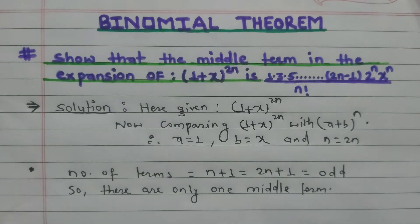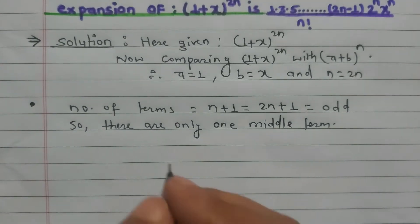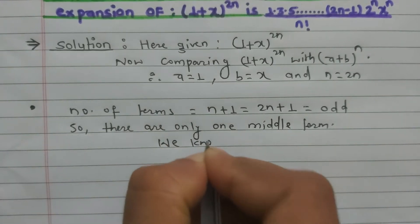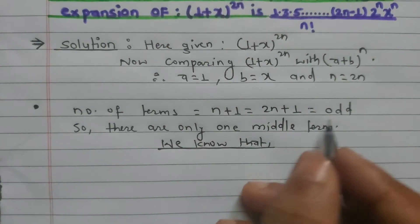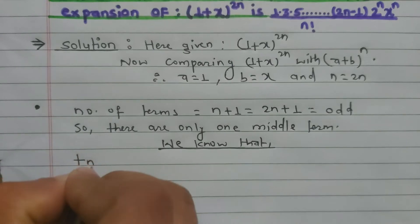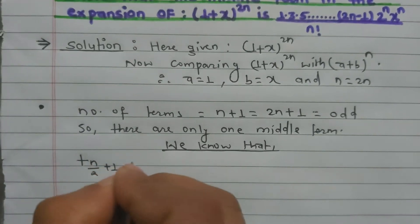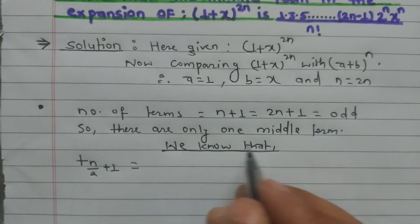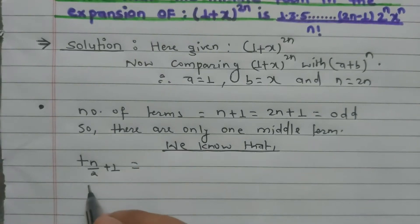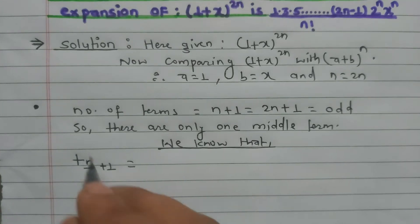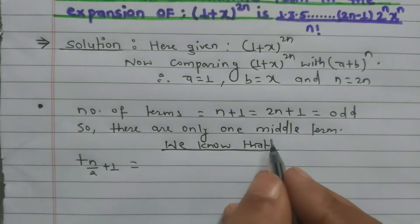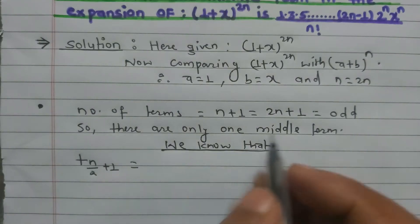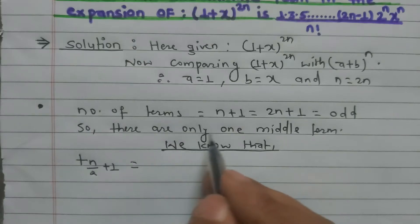Remember: if the number of terms is even, there are 2 middle terms; if odd, there is only 1 middle term. The formula for the middle term when the number of terms is odd is T_(n/2 + 1). If even, the formula changes to T_(n+1)/2 and T_(n+1)/2 + 1. Since here we have an odd number of terms, there is only one middle term.